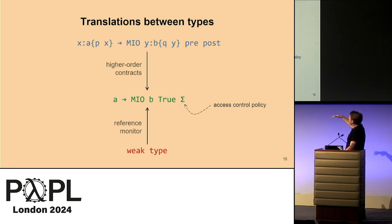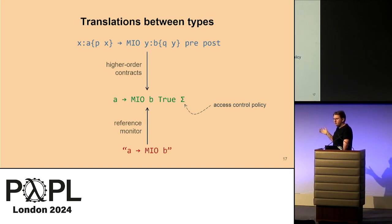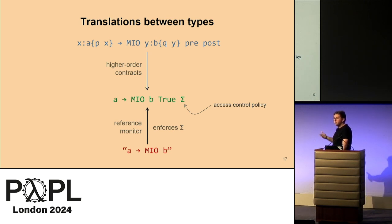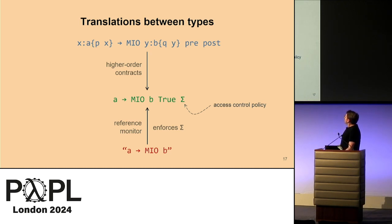From weak type to intermediate type: the intuition is simple. If we have a function of weak type and a reference monitor enforcing an access control policy on it, then we can write as a postcondition that this program satisfies the access control policy. If a program enforces the access control policy, then we can state that the program satisfies it.